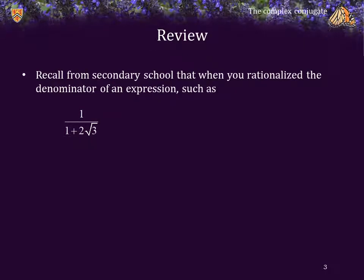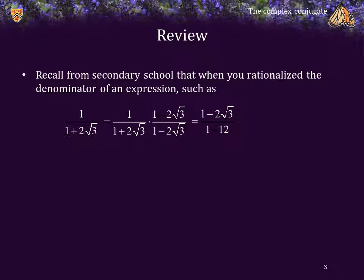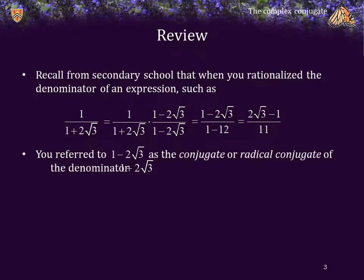Recall from secondary school that when you rationalized the denominator in an expression such as 1 over 1 plus 2 root 3, what you did is you multiplied by 1 — specifically, by 1 minus 2 root 3 over 1 minus 2 root 3. You then multiplied out the denominator and simplified, which gave you your result. You referred to 1 minus 2 root 3 as the conjugate, or perhaps the radical conjugate, of the denominator 1 plus 2 root 3.